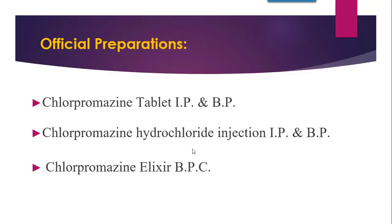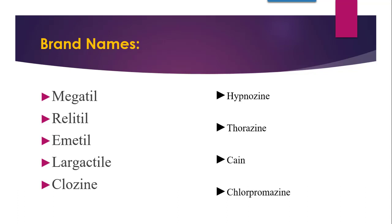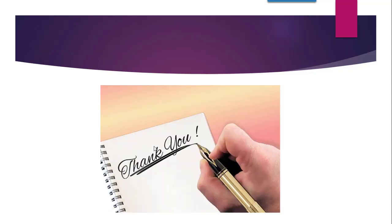Coming towards the official preparations: Chlorpromazine tablet is official in IP and BP. Chlorpromazine hydrochloride injection is official in IP and BP. The elixir of Chlorpromazine is official in BP (British Pharmaceutical Codex). Brand names include Megatil, Relitil, Emityl, Largactyl, Clozine, Hypnozyne, Thorazine, and Chloropromazine. With this, we finish with Chlorpromazine A to Z. Thank you.